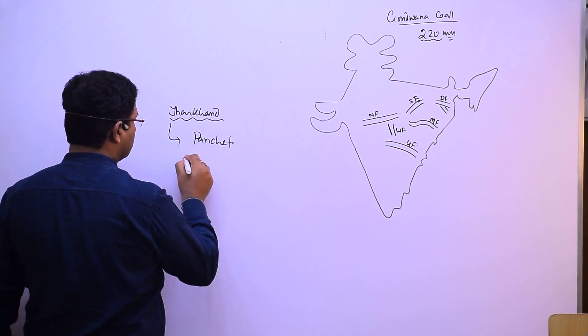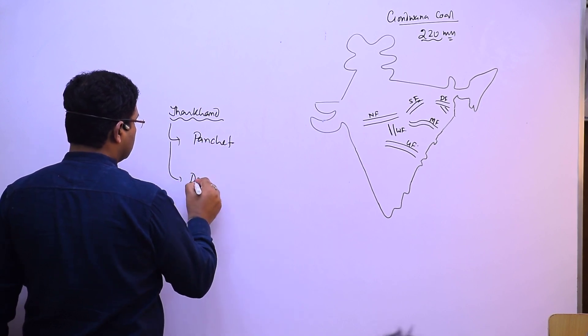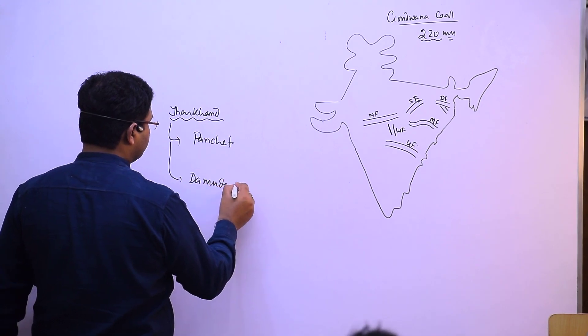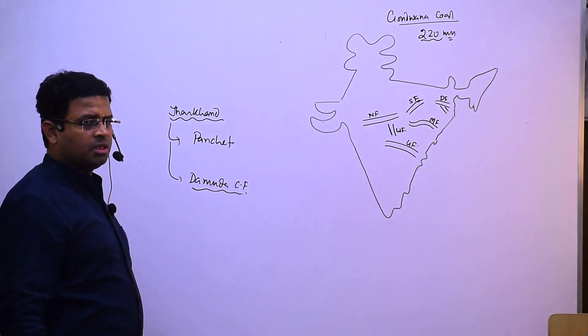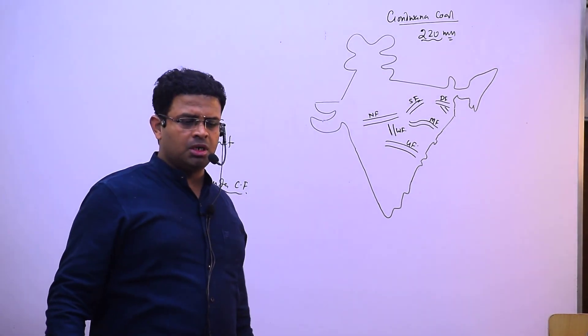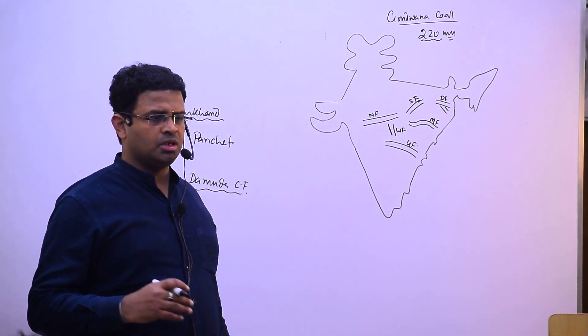One is Panchet, another is Damodar coal field. Which two coal fields did I say? Panchet and Damodar—these are in a coal series.